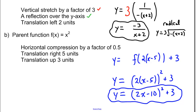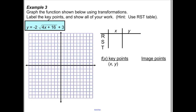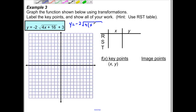Now let's look at graphing using all types of transformations with an RST chart. We have a radical function with a number in front of x that isn't factored out, so factor out that 4 first. Rewriting: y equals negative 2 times the square root of 4(x plus 4), plus 3. This gives five different transformations.